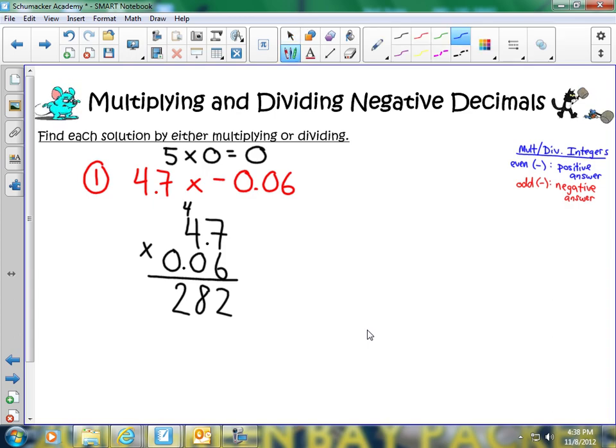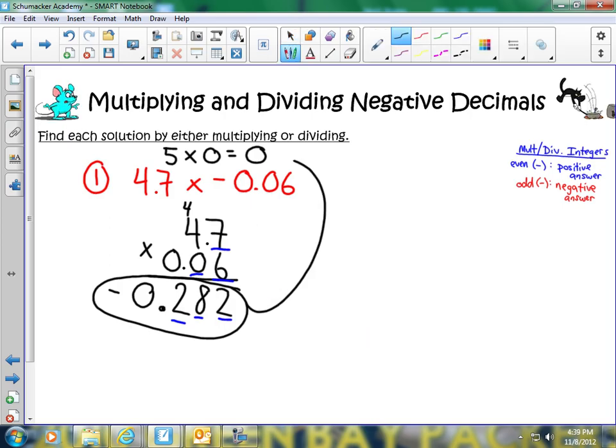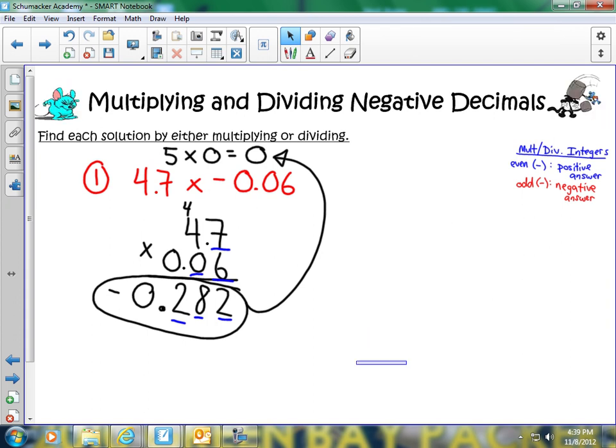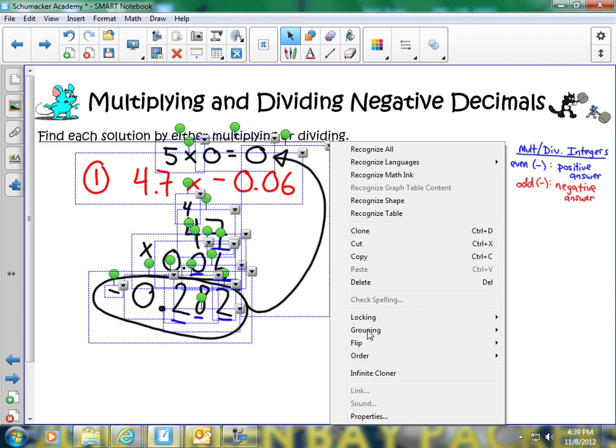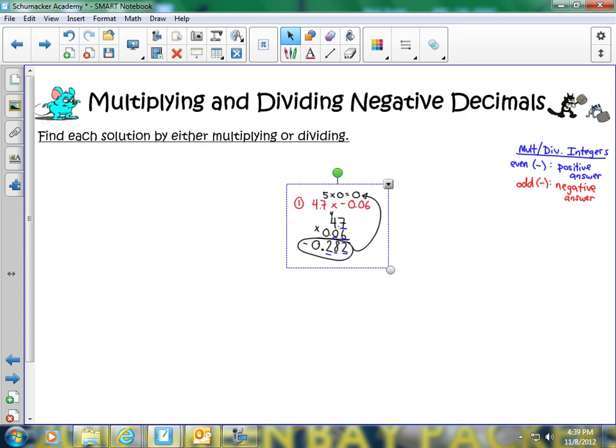Now I need to place my decimal point. So before we begin, I'm going to add up how many digits are to the right of my decimals in the problem. I have 1, 2, 3 numbers to the right of the decimal. Therefore, I need to have 1, 2, 3 numbers to the right of my decimal in my answer. So the decimal would go right here. I put a 0 here. And since we have one negative sign, positive times a negative, the answer gets a negative assigned to it. And I get negative 0.282. And as we look, that is pretty close to the answer 0.